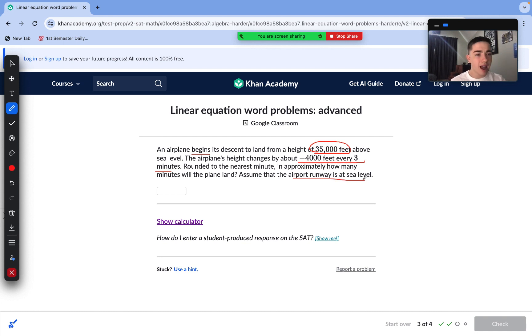We just need to create our linear equation. We are given our slope and our y-intercept here. We just need to find when its y value or its height is equal to zero, meaning zero at sea level. Our initial value begins. It's our keyword here. So, our y-intercept is 35,000.